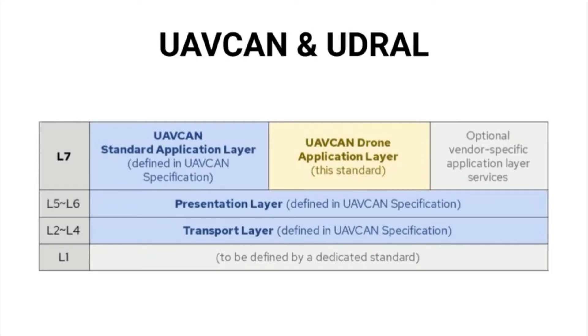The UAVCAN protocol was developed to unify real-time communications and networks in vehicle systems. The UAVCAN V0 protocol, which has existed for several years, has gained great popularity among users. It is used to provide a specialized application layer specification optimized for drones, covering layers 2 to 7 per the OSI model.